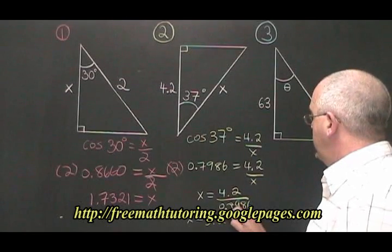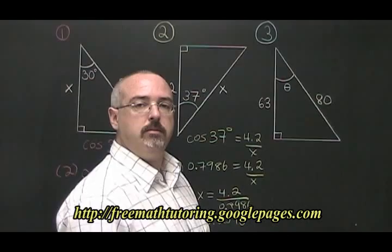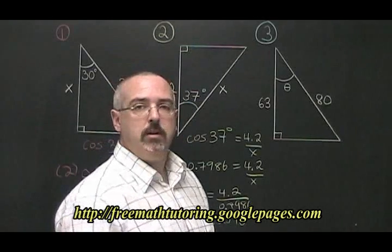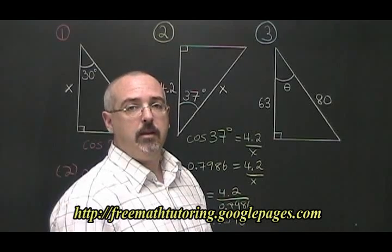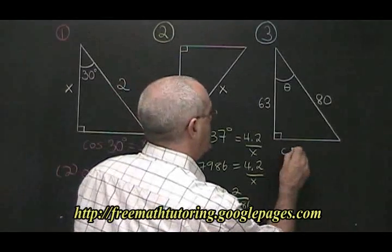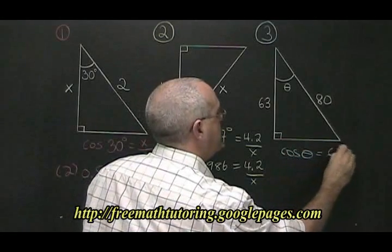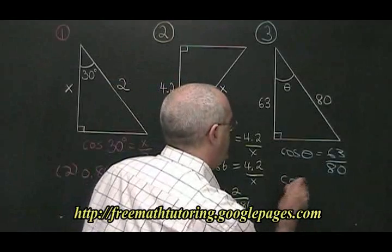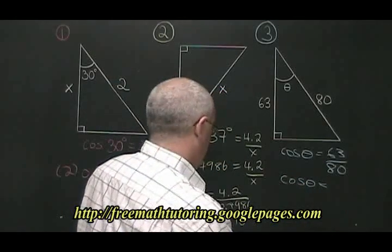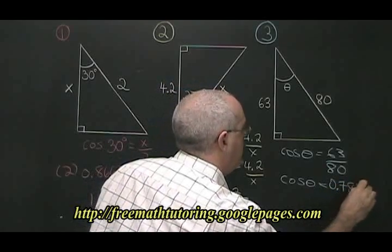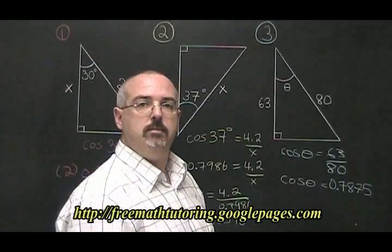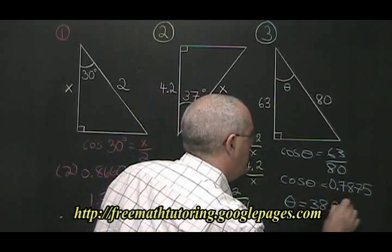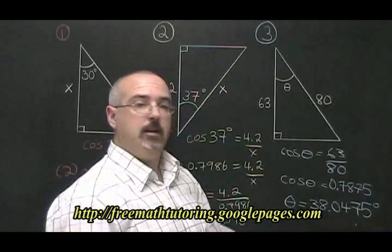In example 3, if we have a 63-unit adjacent side and an 80-unit hypotenuse, we'd like to know the measure of the angle theta. We fill in our CAH formula like this. Cos of theta equals adjacent 63 over hypotenuse 80. Therefore, we replace 63 over 80 in our formula with 0.7875, and thus we know that theta equals 38.0475 degrees. Don't forget the degrees, that is your unit of measure.